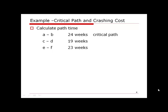The first step is to calculate path times and identify the critical path. We have three paths in this project: ABD, and EF. The time on each path is calculated, and path AB has a time of 24 weeks, which is the longest, making it the critical path.